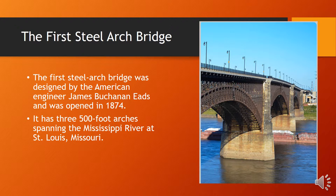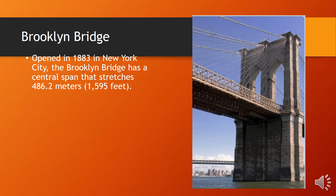The Eads Bridge has three 500-foot arches spanning the Mississippi River at St. Louis, Missouri. The Brooklyn Bridge, opened in 1883 in New York City, has a central span that stretches 486.2 meters or 1,595 feet.